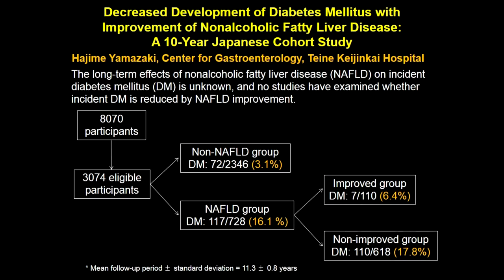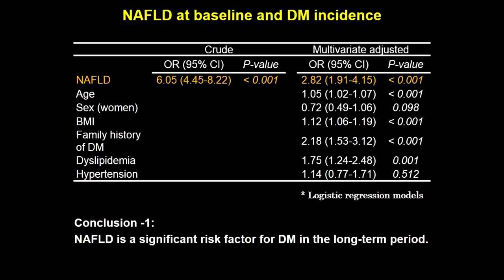Some patients improved and others did not. So overall there were three groups: patients without NAFLD, patients with NAFLD who did improve, and those who did not. After statistical analysis, the group could show that NAFLD at baseline is a significant risk factor for diabetes. We all know traditional risk factors such as family history, sex, and body mass index — but the most prominent risk factor in this cohort was non-alcoholic fatty liver disease.